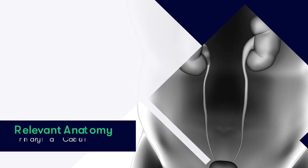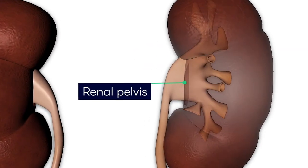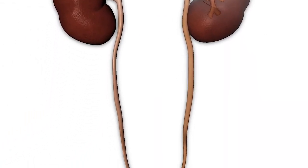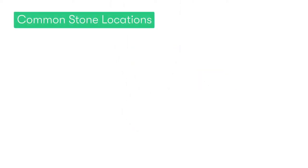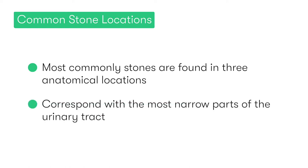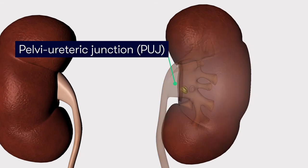Let's remind ourselves of some key anatomy. Here we have the kidney, and lying within the kidney we have the renal pelvis. Urine is drained from the renal pelvis into the bladder via the ureters, which are thin tubes of smooth muscle. The most common anatomical locations where urinary tract stones are found are at three points along the urinary tract where it becomes its most narrow. Starting superiorly, the first location is the pelvic ureteric junction, or PUJ, where the renal pelvis and the ureters meet.